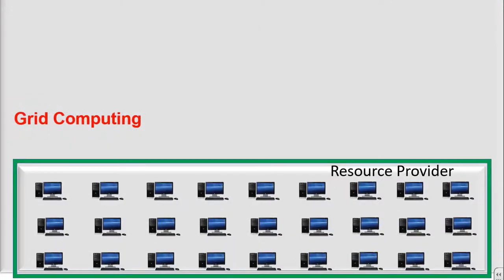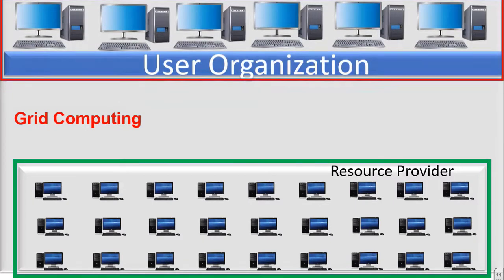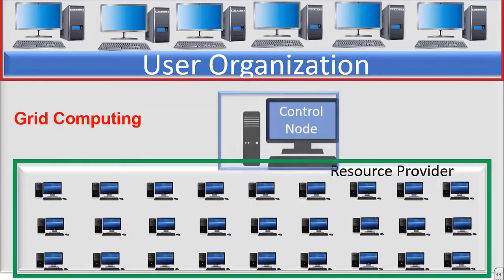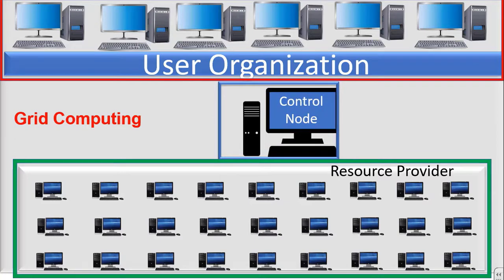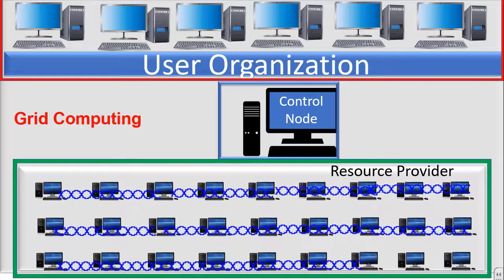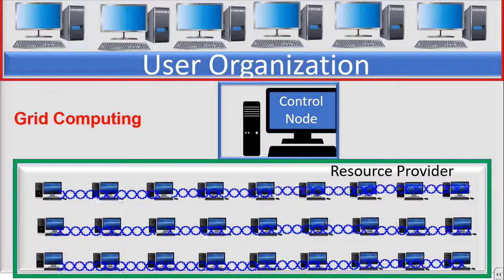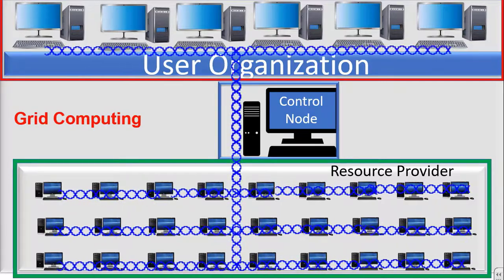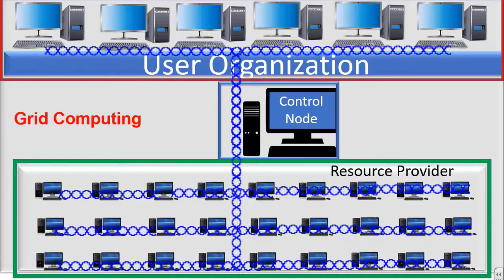Look at this example. These are the resource providers — their systems are standing idle. This is the user organization which will make use of the idle resources of different users. There is one control node in between the user organization and the resource provider. The resources are used and controlled by the control computer, and they are linked to the user organization's computer. The user organization harnesses the power of these idle resources. This is grid computing.